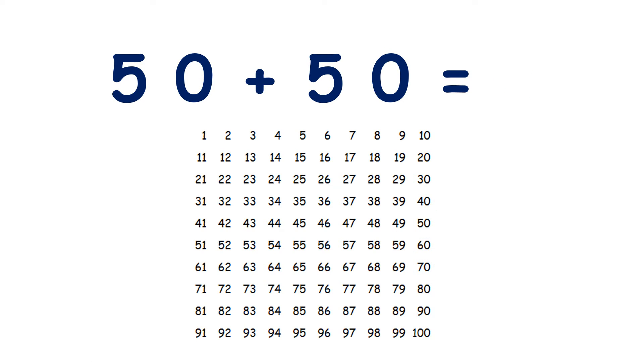Now, 50 add 50. So we find 50 on our 100 square. And if we're adding 50, we're adding 5 tens. So we can go down 1, 2, 3, 4, 5. So 50 add 50 is 100.